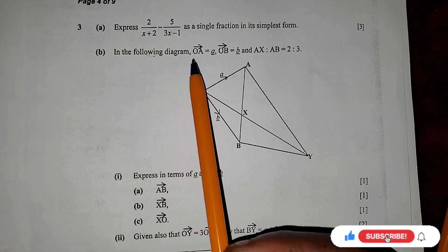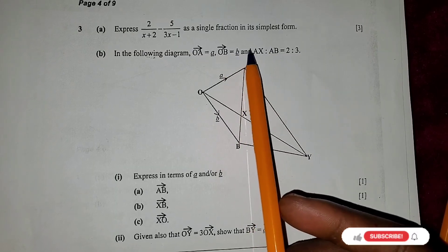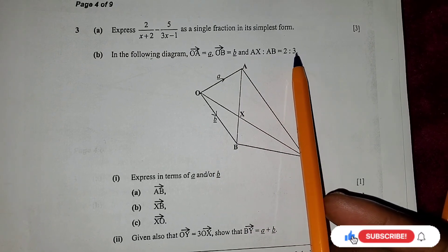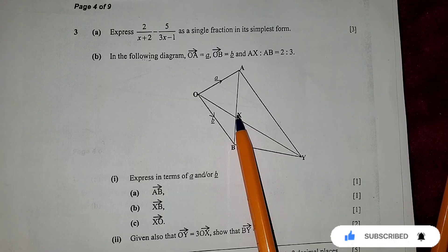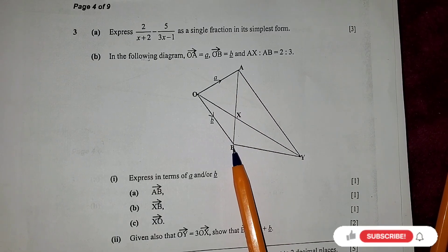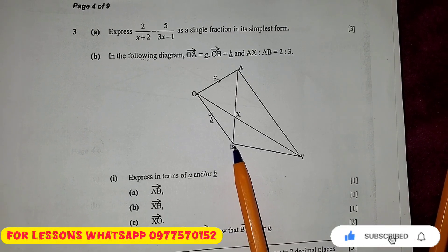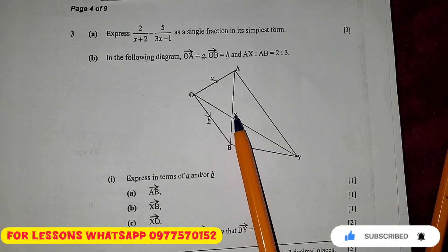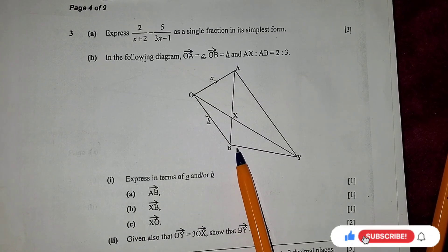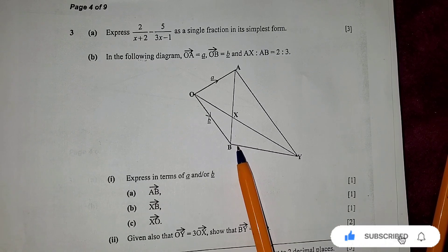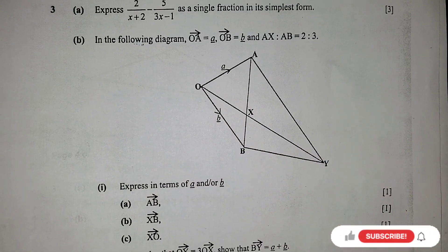In the following diagram, vector OA and vector OB are given. You are told that AX to AB is two to three. AX is here — from A up to X is two, but from A to B is three. This is a little bit different from the common questions usually asked in exams, because this is not a ratio from here to here and here to here. It is from A to X and from A to B, so you need to take note of that to avoid a serious mistake.